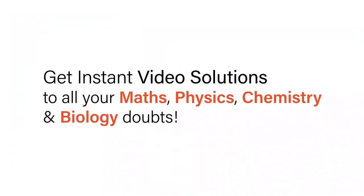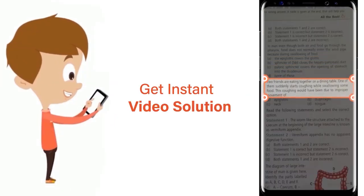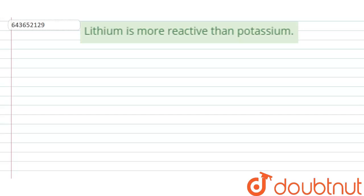With Doubtnut, get instant video solutions to all your maths, physics, chemistry, and biology doubts. Just click the image of the question, crop the question, and get instant video solution. Download Doubtnut app today. The question given here is lithium is more reactive than potassium.